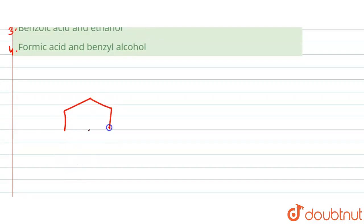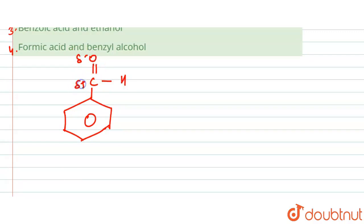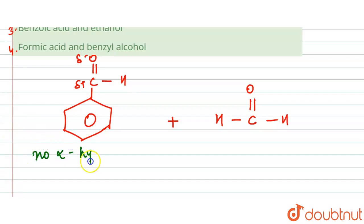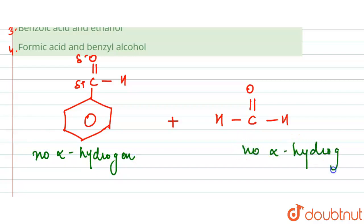First, we draw benzaldehyde — the structure is a benzene ring with CHO (C double bond O). Then we have formaldehyde, which is H-C(=O)-H. Importantly, benzaldehyde has no alpha hydrogen, and formaldehyde also has no alpha hydrogen.